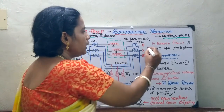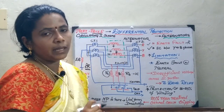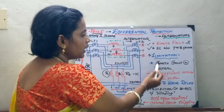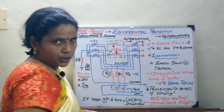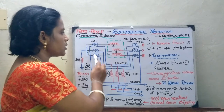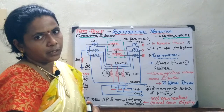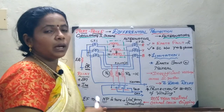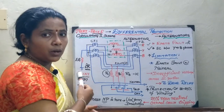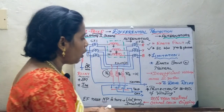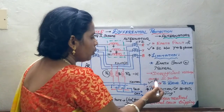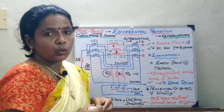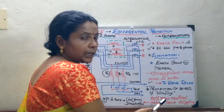We have seen the earth fault and phase-to-phase fault analysis. Now let us look at the limitation of this scheme. When an earth fault occurs near the neutral, it is observed that 100% protection of the stator windings cannot be achieved. If a fault occurs near the neutral, the magnitude of current develops insufficient voltage across the short-circuited portion, so the relay cannot operate immediately. Only 80 to 85% of the winding can be protected.